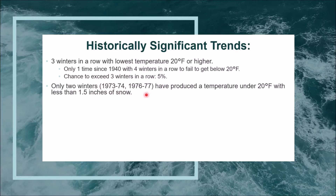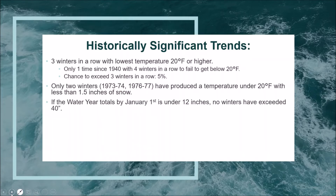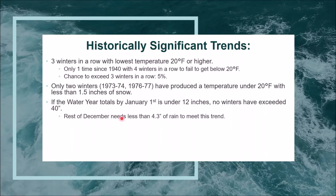Both snowless-but-cold winters were from what I call the snow drought of the mid-1970s — 1973-74 was a strong La Niña and 1976-77 was a weak El Niño. When it comes to rainfall, if the water year total by January 1st is under 12 inches — about two inches below average — no winters have gotten into an above-average rainfall category; they've been near or below average. The rest of December needs less than 4.3 inches of rain to meet this historically significant trend.